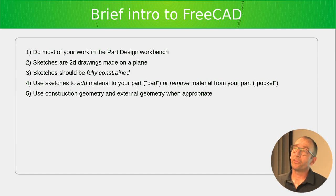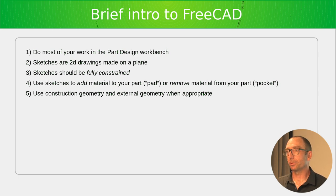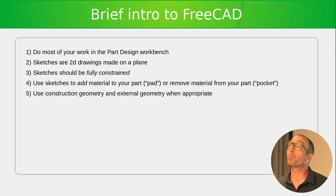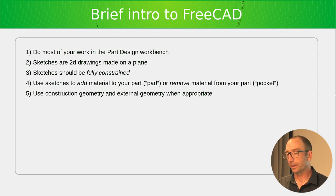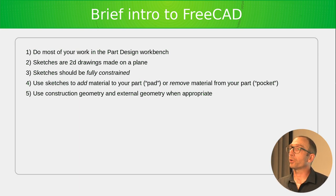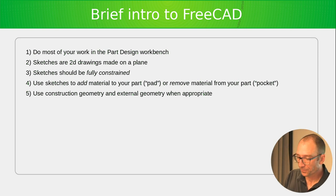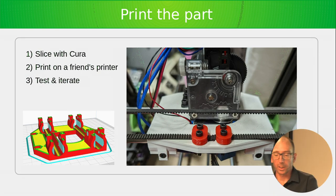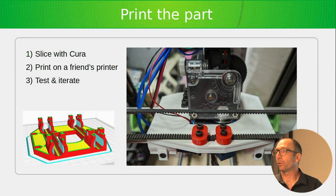FreeCAD also has parametric design, where you give symbolic names to dimensions and reference those symbols in other features — for example, parametric boxes where changing a single number automatically generates comb joints for all edges. The FreeCAD developers are working on the topological naming problem but it's not yet solved. If FreeCAD's quirks are too annoying, SolveSpace is the other main GUI-based free CAD software. Once you've exported your model from FreeCAD as STL, you import it into the slicer — the next layer down.